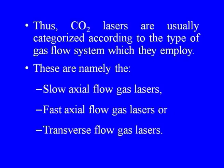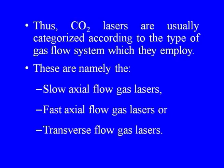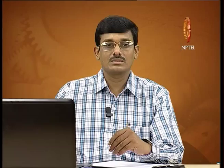Slow axial flow gas lasers are the simplest of the CO2 gas laser family. Gas flow is maintained in the same direction as the laser resonator's optical axis and the electric excitation field. These are capable of generating laser beams with a continuous power rating of approximately 800 watts per meter of discharge length. A folded tube configuration is used for achieving output power levels of 50 to 100 watts maximum.